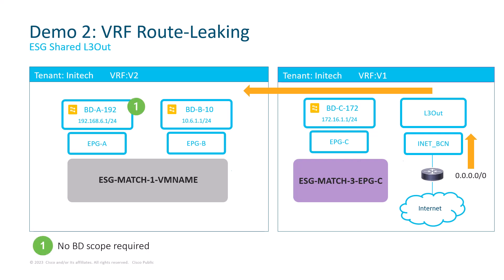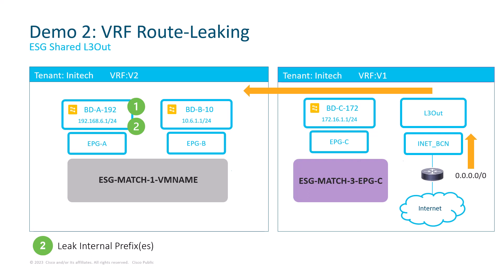Step one: because we want bidirectional communication, we need to ensure that the external router knows about the bridge domain subnets used by ESG1. We don't need to modify the scope of these subnets to advertise them externally — configuration from step two will take precedence and ensure proper advertisement. Step two: in V2, I need to leak 192.168.6.0/24 to V1. I could also use a subset, but I decided to leak only the BDA subnet, which I already did in the last scenario, so the configuration is in place with a small tweak needed.